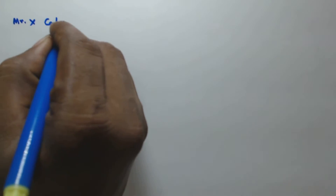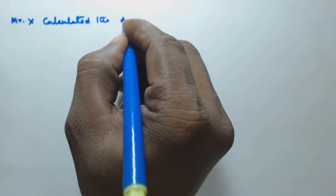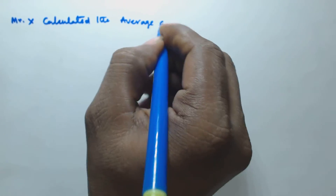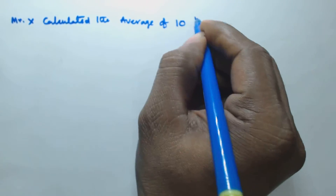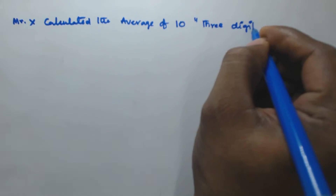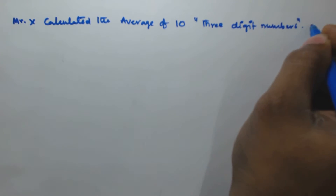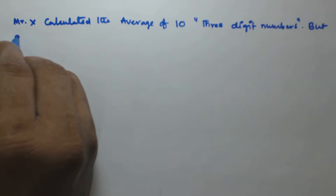Hello friends, welcome to Score More Aptitude channel. In this video we will see another problem based on the averages concept. The problem is: Mr. X calculated the average of 10 three-digit numbers, but due to a mistake...